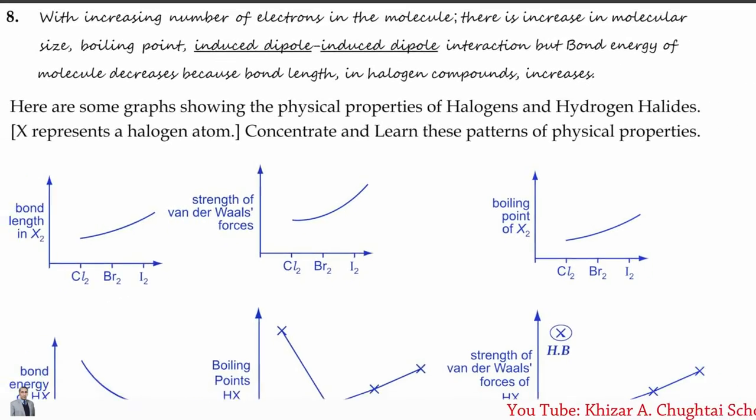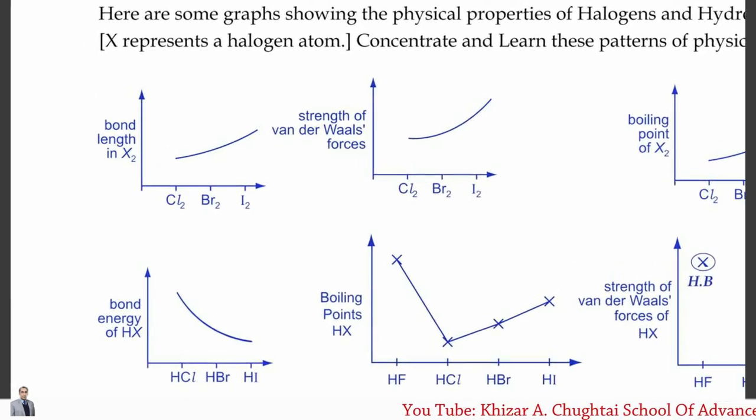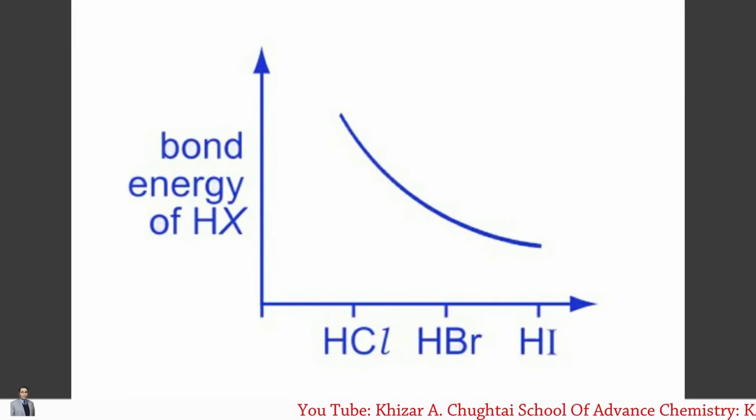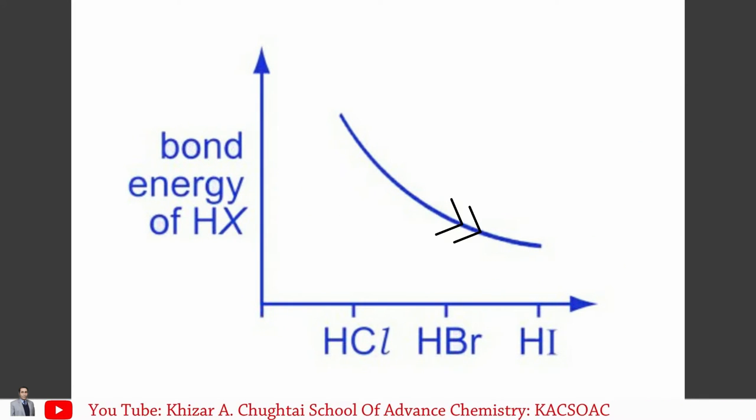Bond energy of the HX: HCl, HBr, and HI. Once again, as the size of the halogen increases, basically bond energy decreases. For example, HCl has a stronger bond, then HBr is the weaker bond, and in this case, HI has the weakest bond.